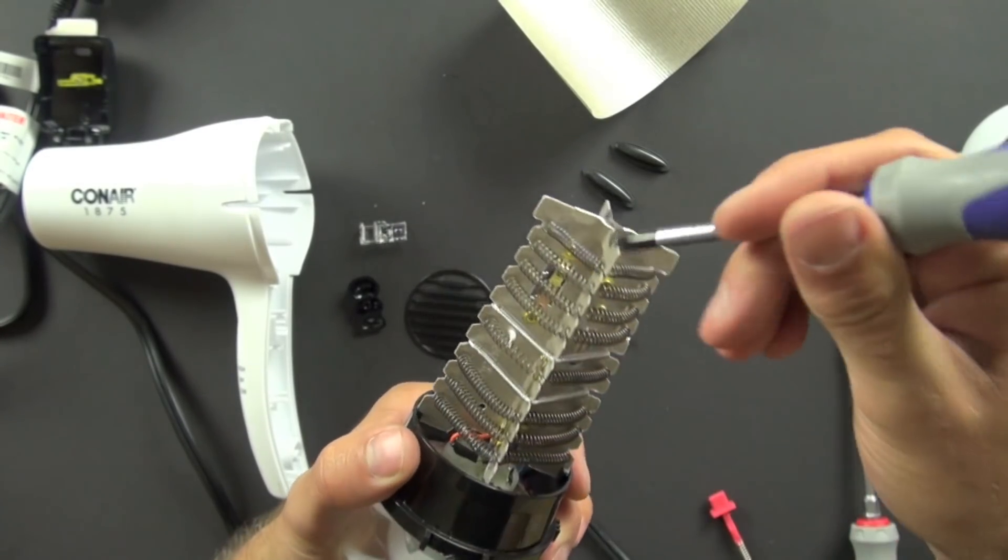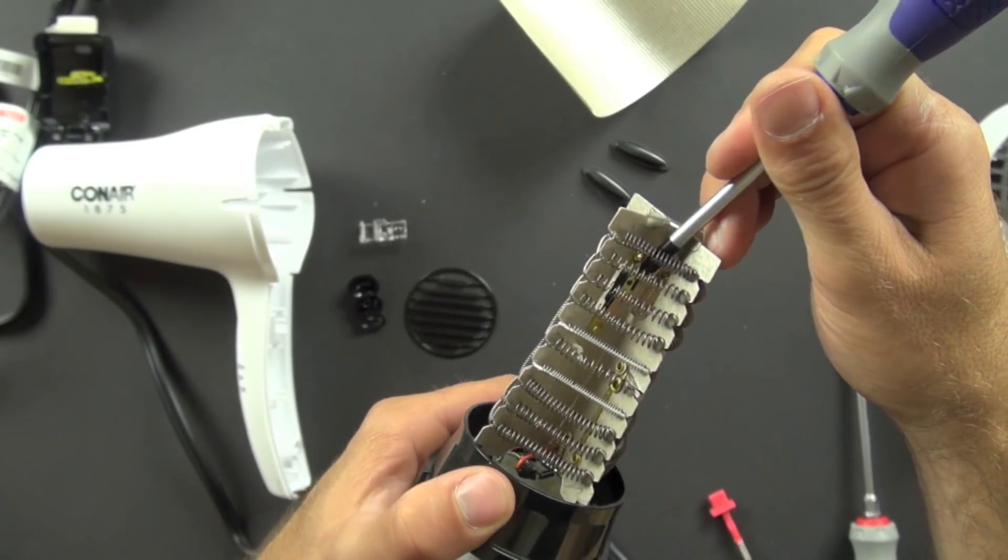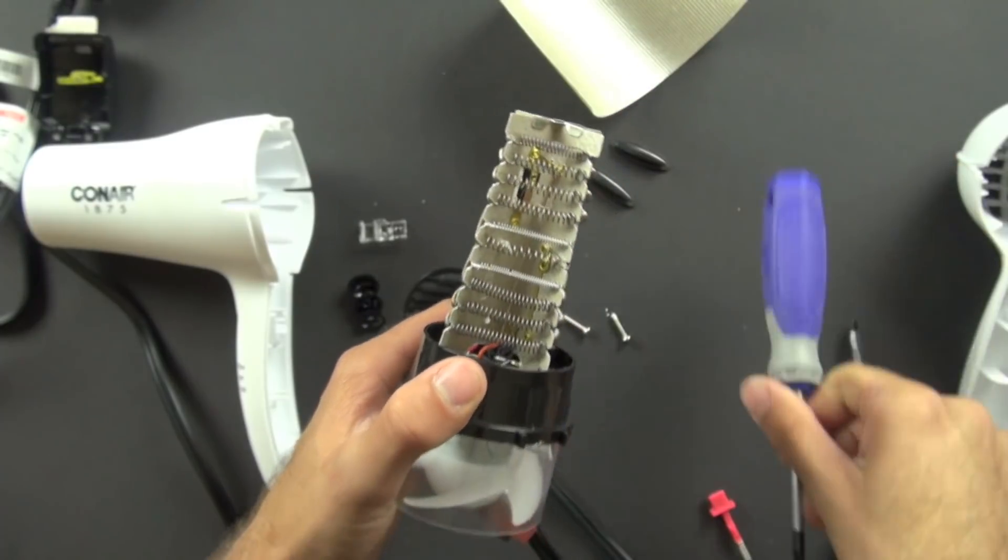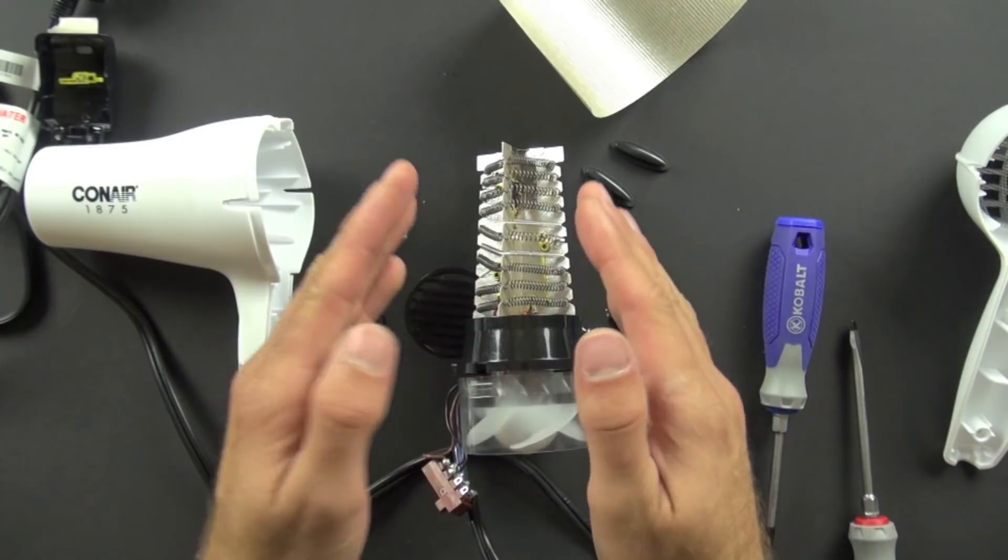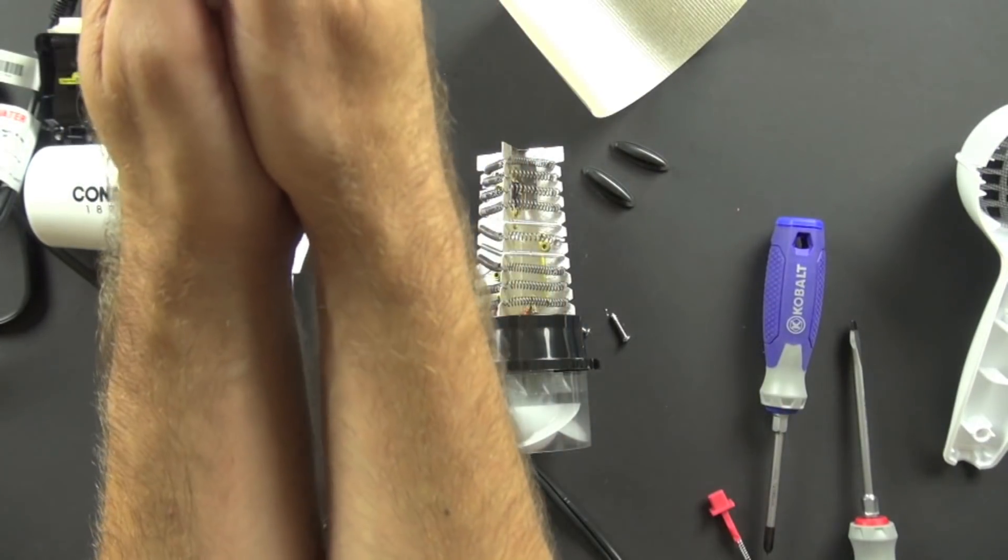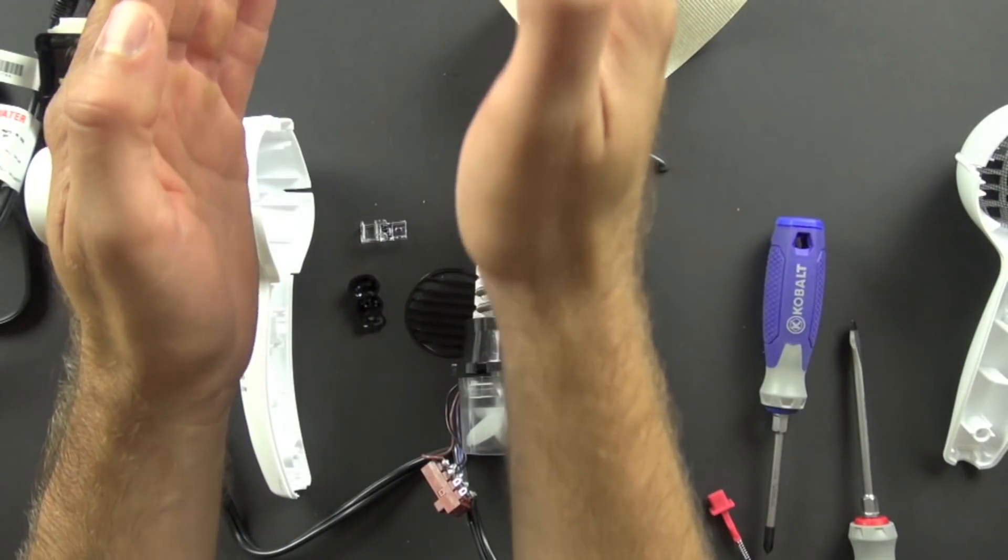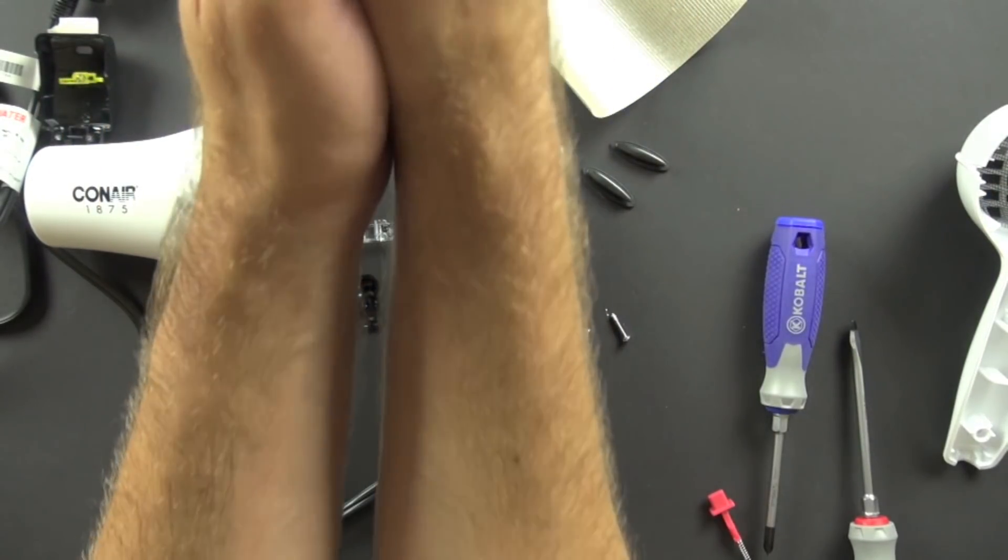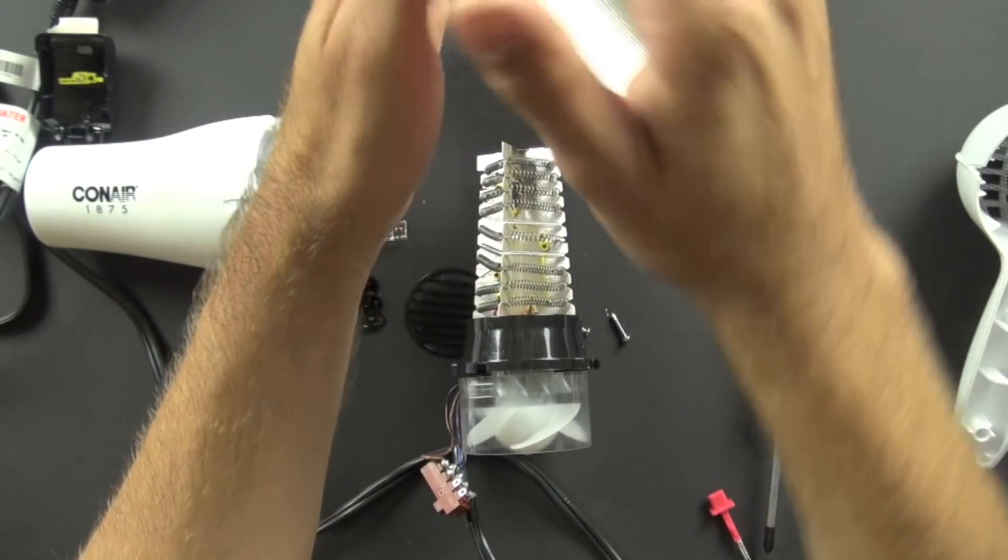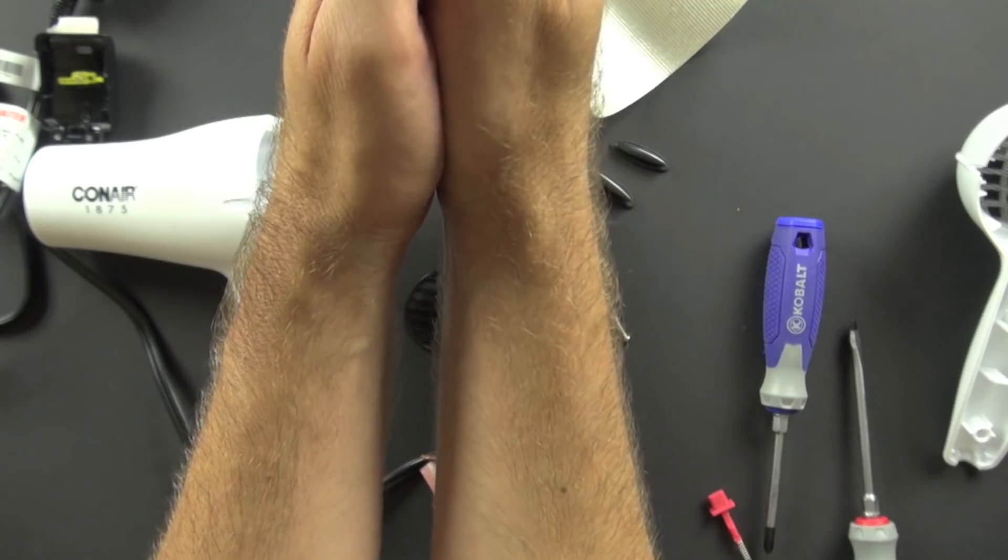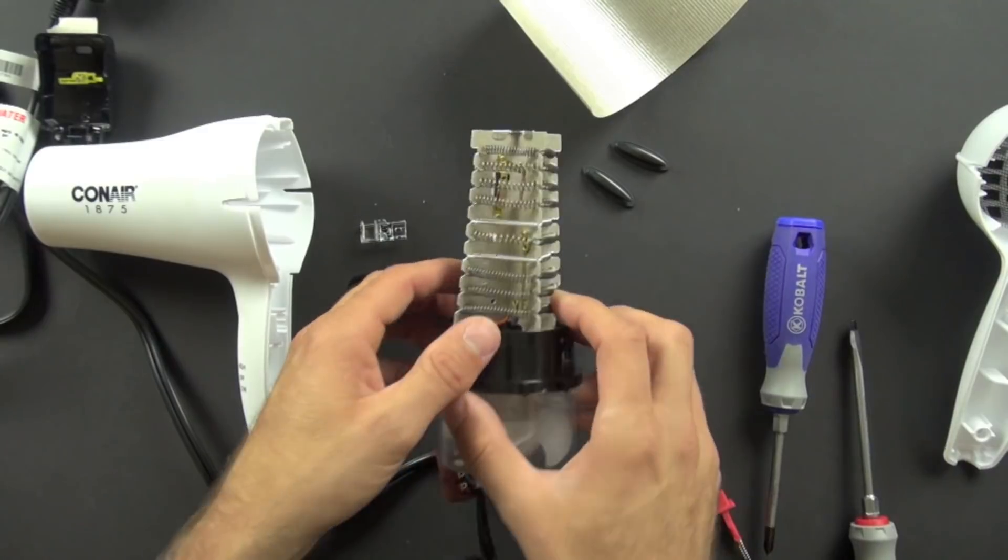And right here, this part right here is a bimetallic strip. So that bimetallic strip is made out of two pieces of metal. What it does is when the metal is heated to a certain point, it causes the bimetallic strip to bend. One piece of metal has a different expansion rate than the other piece of metal, and it causes the strip to bend. So maybe this one on the outside, if this was the bimetallic strip, this one expands faster than this one and it causes it to bend.